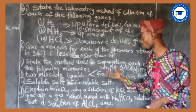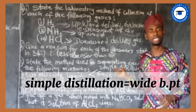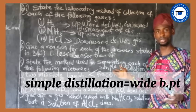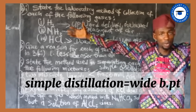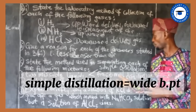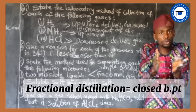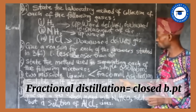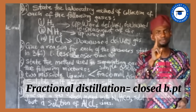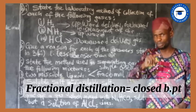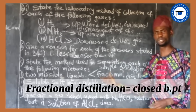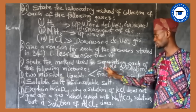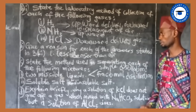The physical property used is boiling point. For simple distillation, the two liquids have a wide difference in boiling point. For fractional distillation, the liquids have close boiling points. Note the word miscible — miscible liquids are separated using simple distillation or fractional distillation.